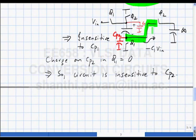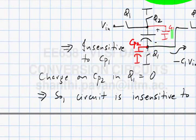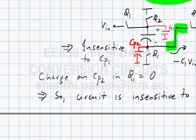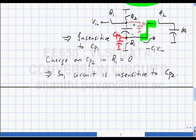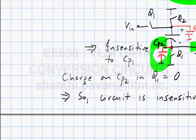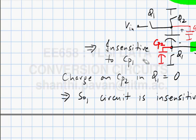The voltage on this node in phi2 is 0, because it is connected to an infinite capacitor — the voltage across an infinite capacitor is always 0. Cp2 in phi1 is connected to real ground; in phi2 it is connected to virtual ground. Its potential stays at 0 — it just switches between real and virtual ground.